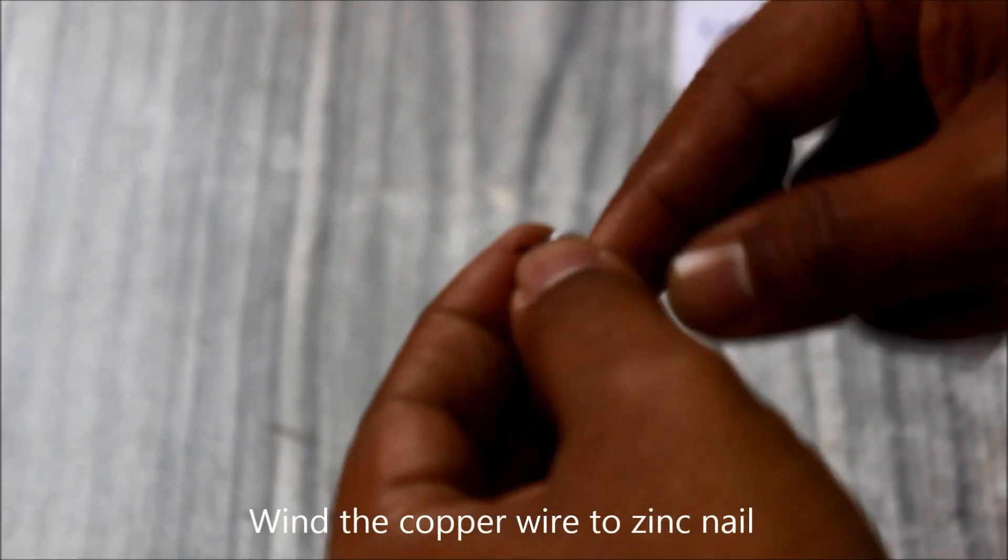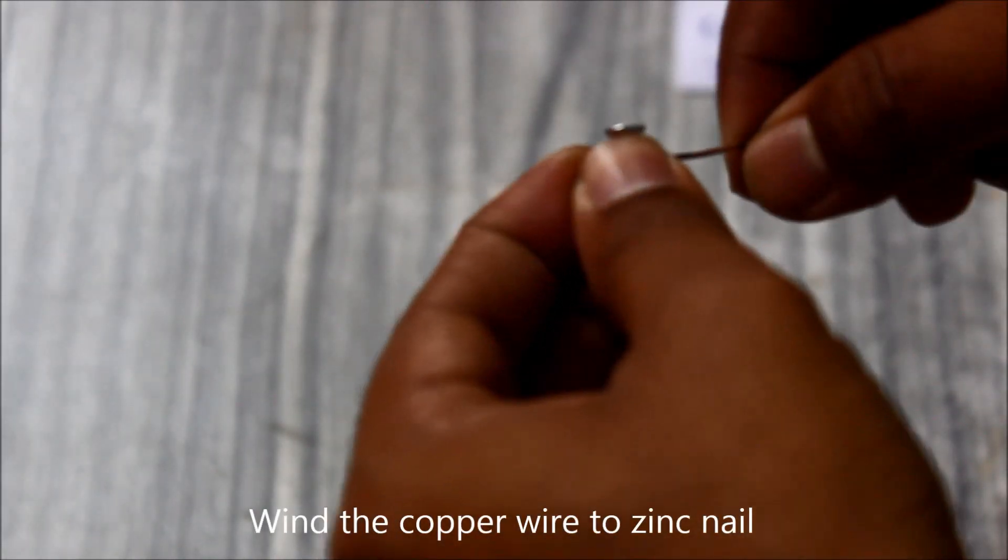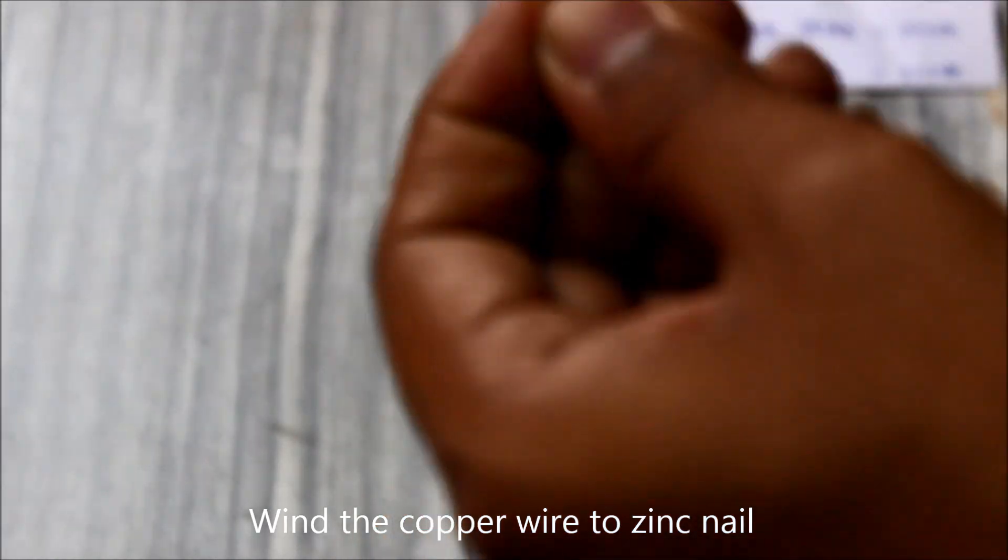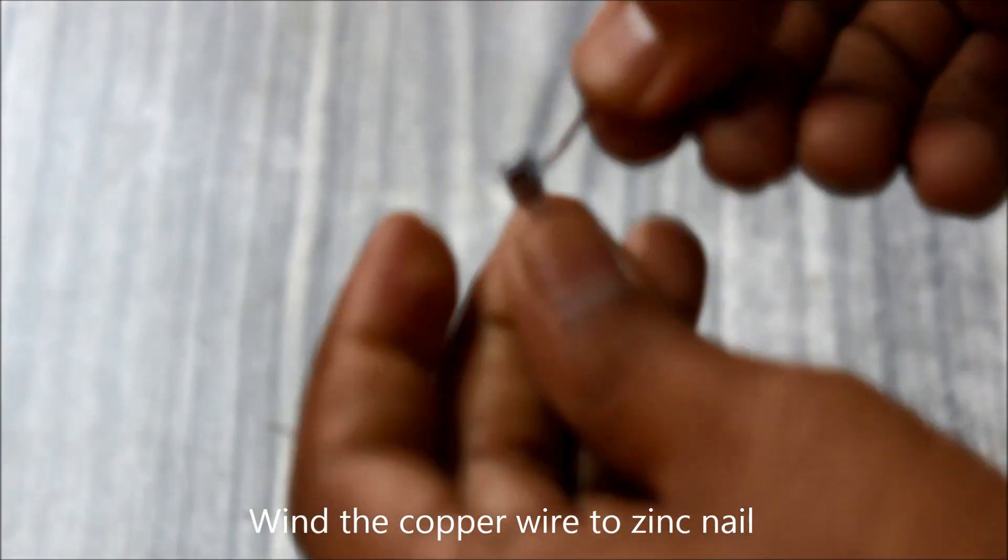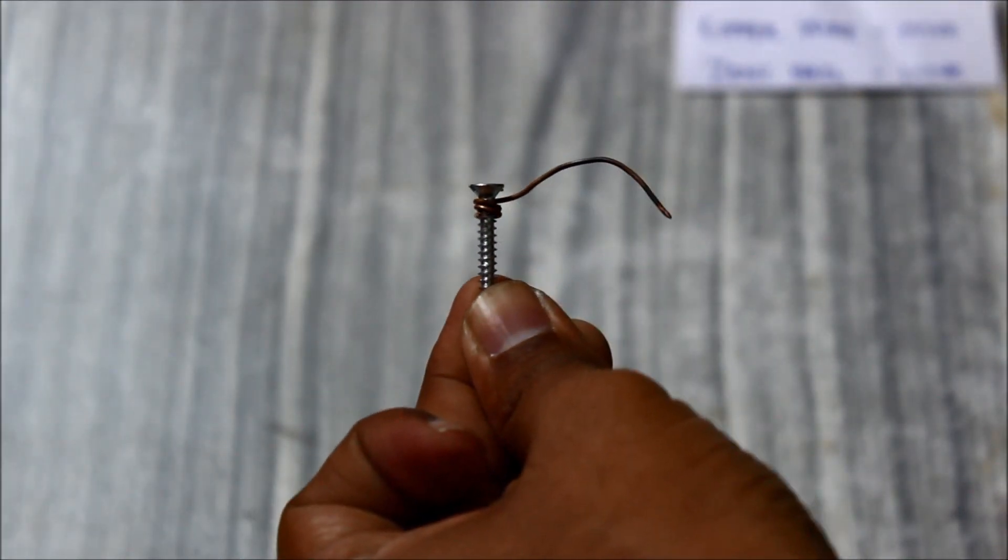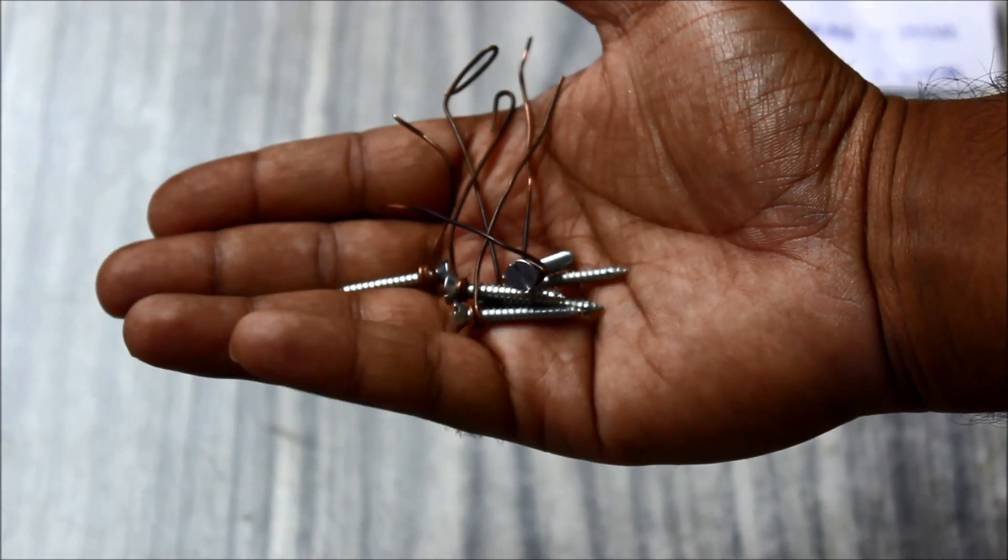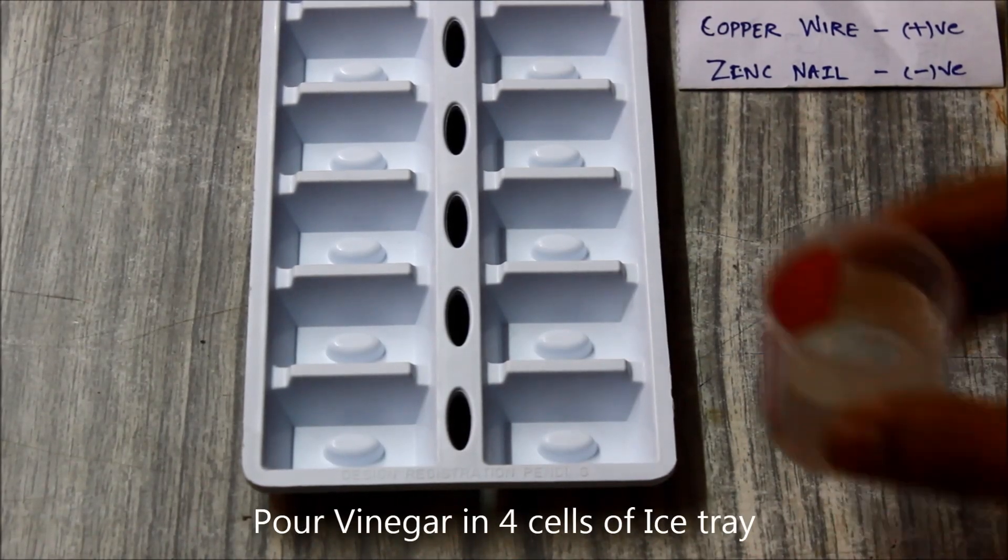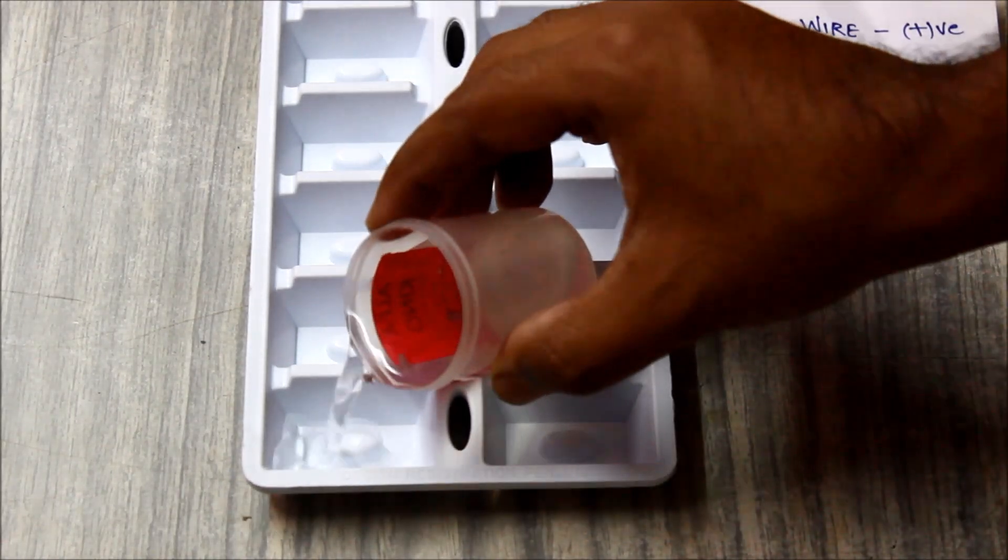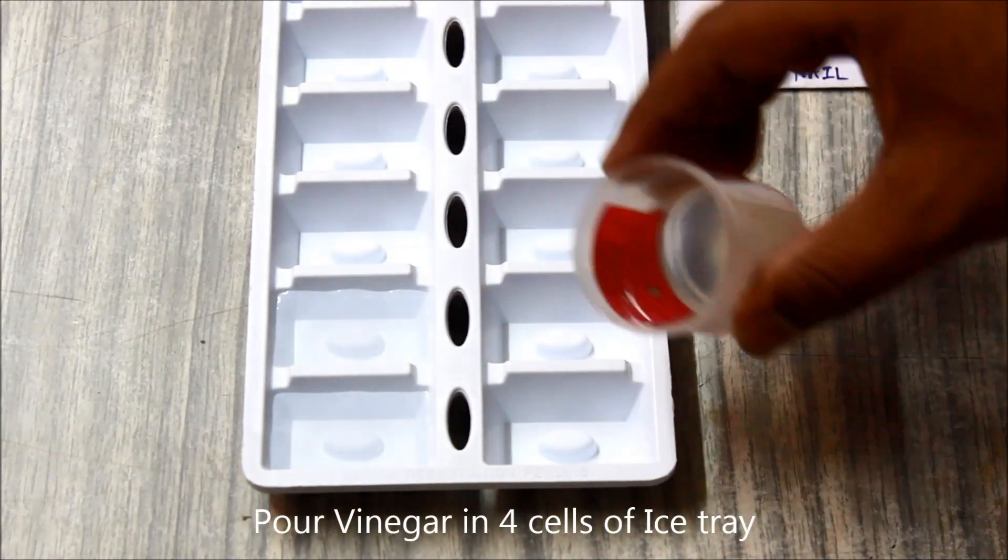One volt output from one cell, so we'll require four volts from four cells. The next step is to bind the copper wire to the zinc nail like this. Do this with four or five different nails. Now pour vinegar into four cells of the ice tray like this.